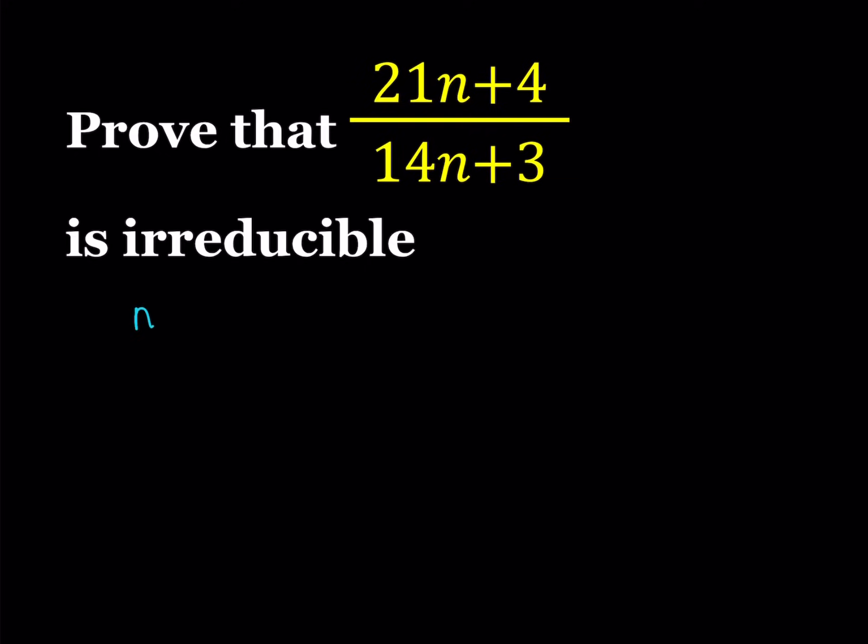For example, if n is equal to 1, what happens to our fraction? Let's check it out. We're going to be getting something like 25 over 17. Irreducible basically means that 25 and 17 have no common factors besides 1.